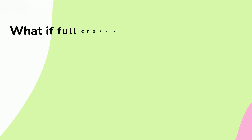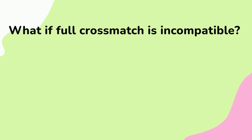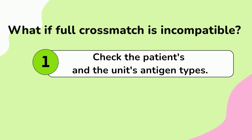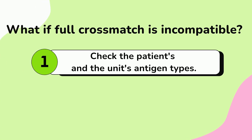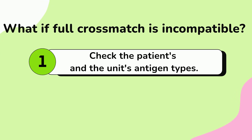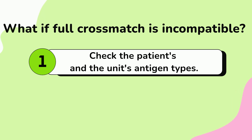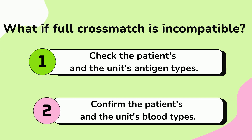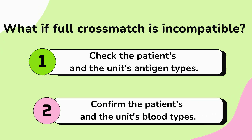What if the full crossmatch is incompatible? You will have to make sure that the unit you selected for crossmatch with your patient is antigen negative for the antibody that your patient has. This can be very difficult, especially when your patient has multiple antibodies. I explained how to calculate how many units you need to screen for antigen-negative in my previous video — please check it out at the end.